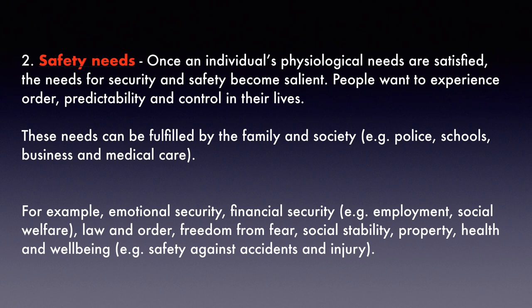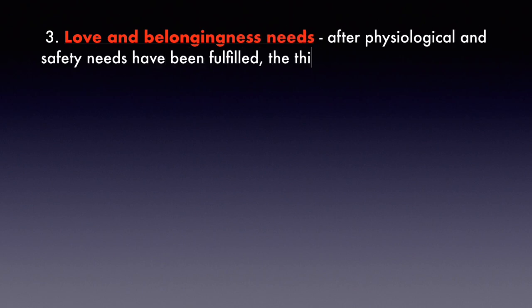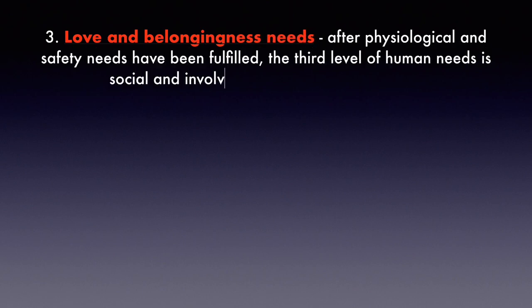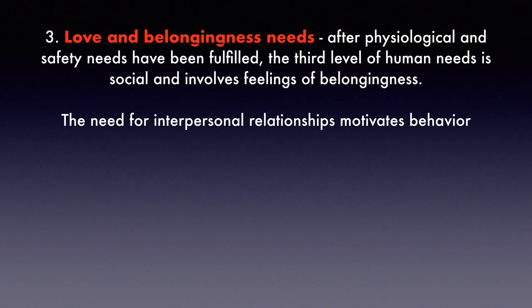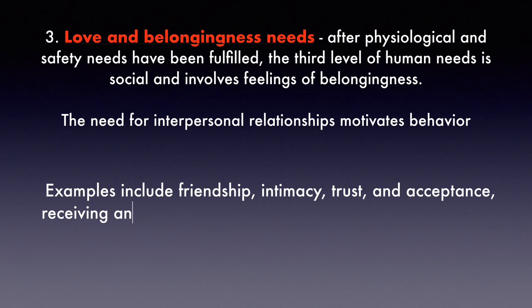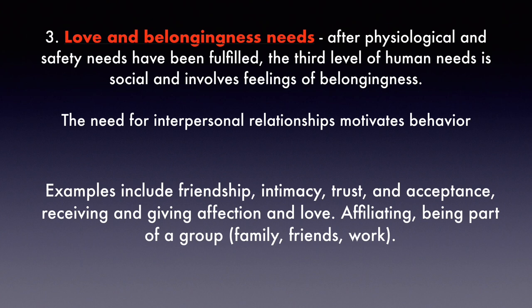After physiological and safety needs, the third level of human needs is social and involves feelings of belongingness. The need for interpersonal relationships motivates behavior. Examples include friendship, intimacy, trust, and acceptance — receiving and giving affection and love, affiliating, being part of a group such as family, friends, and also informal groups at work.